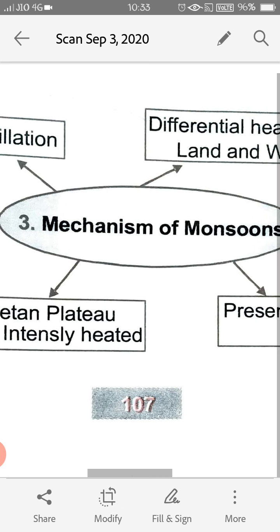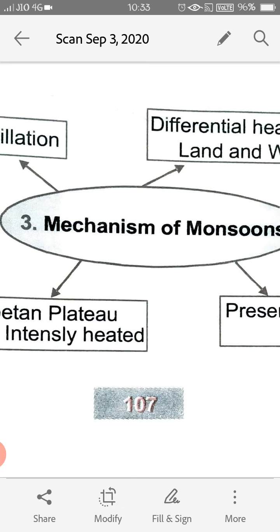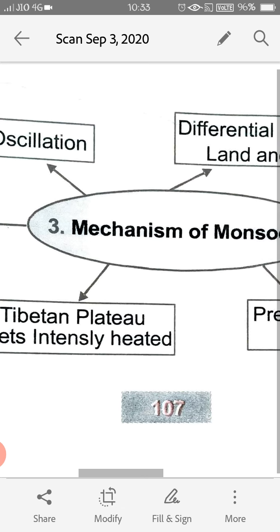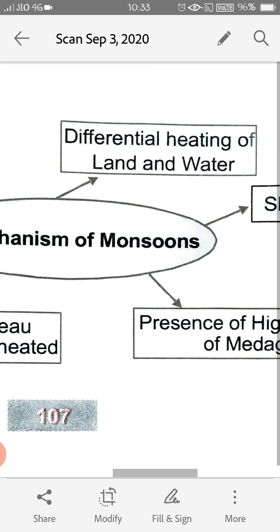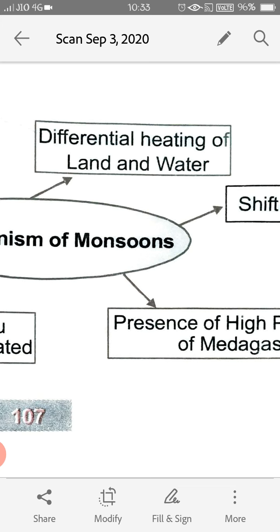In this topic, we'll understand what are the different factors that are the main mechanisms of monsoon. The very first one is differential heating of land and water.